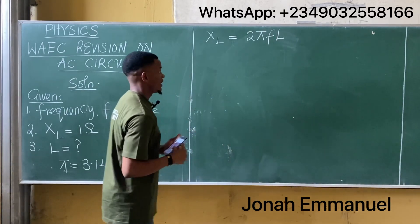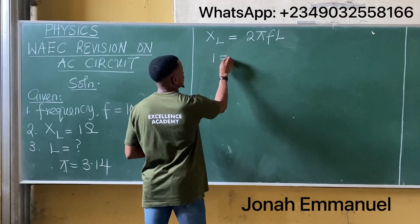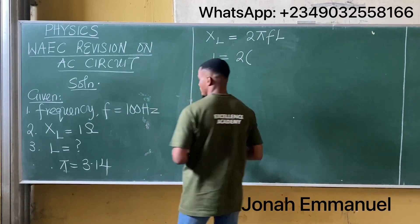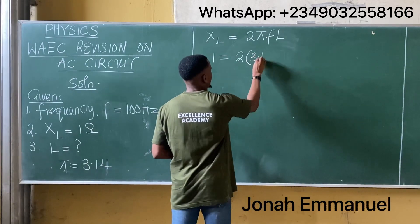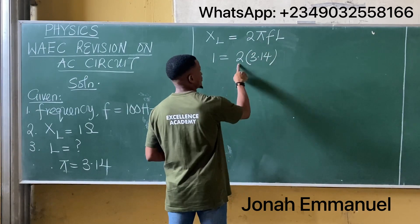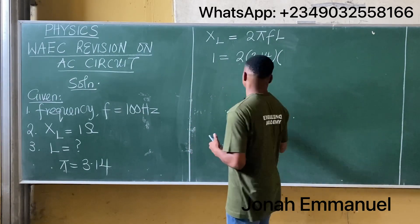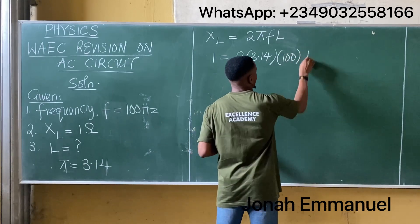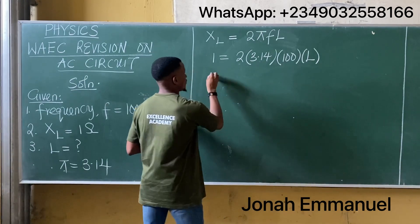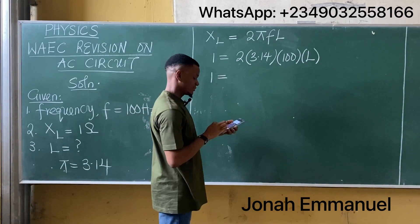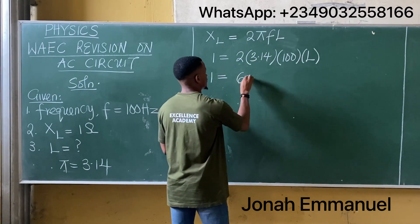This value XL is given to us as one, so we have: one is equal to two times pi — and in this question we're asked to take pi as 3.14 — so two times 3.14, times frequency 100 hertz, times L (inductance). My next task is to multiply all of this: one equals two times 3.14 times 100, which gives 628, times L.